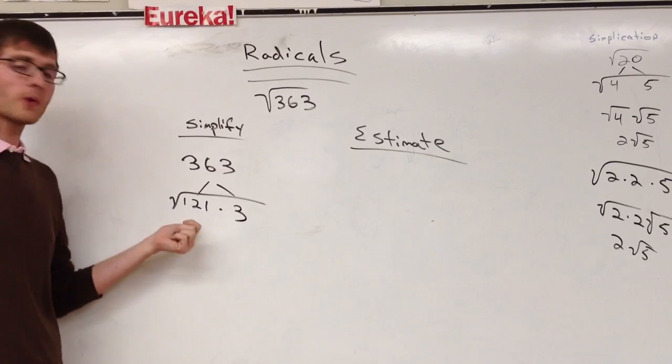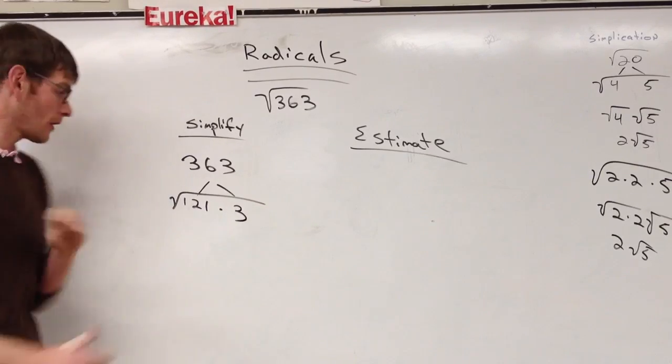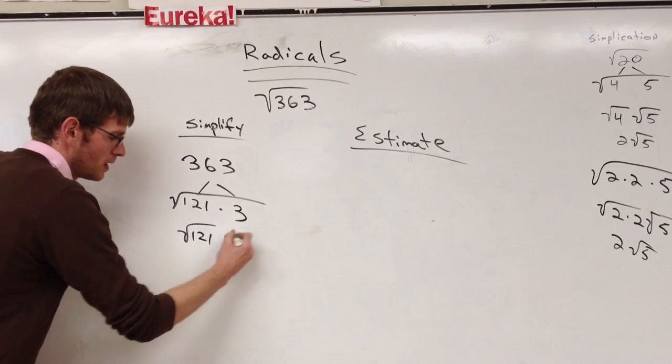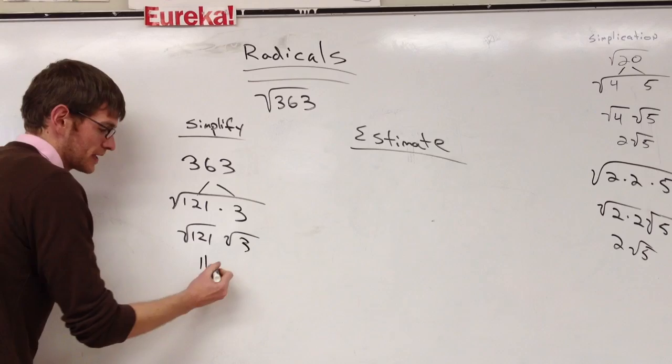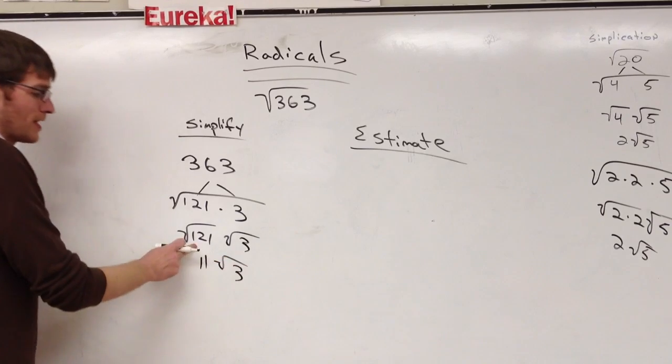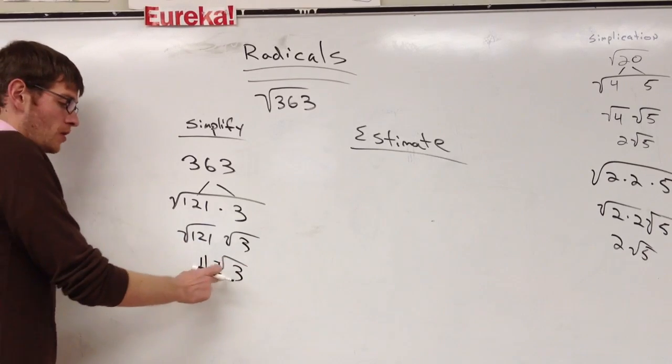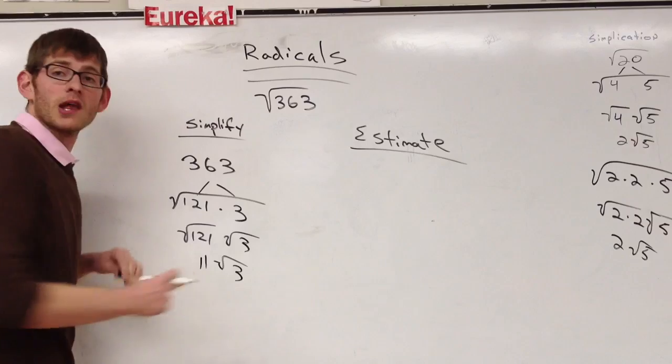And Che, what's the square root of 121? 11. So we can write the square root of 121 times the square root of 3. And then our final step is taking the square root of 121, which is 11 root 3.